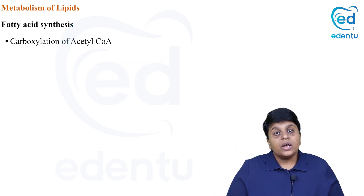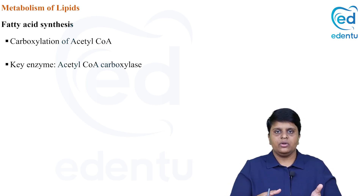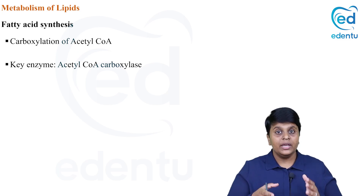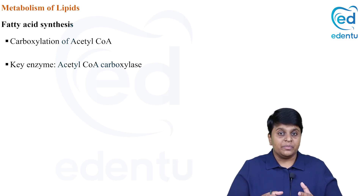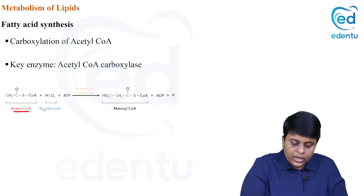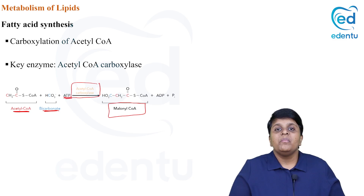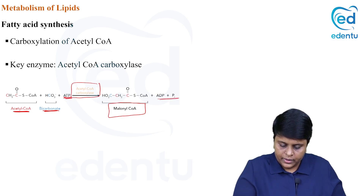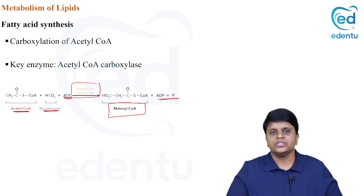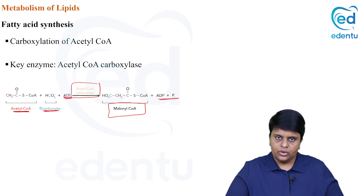The next step is carboxylation of acetyl-CoA. The key enzyme here is acetyl-CoA carboxylase — carboxylases require the vitamin biotin. The reaction involves acetyl-CoA combining with bicarbonate and ATP, catalyzed by acetyl-CoA carboxylase, to form the three-carbon compound malonyl-CoA. ATP hydrolysis is associated with this reaction, providing energy to activate the acetyl-CoA. Acetyl-CoA carboxylase is the key regulatory enzyme of fatty acid synthesis.